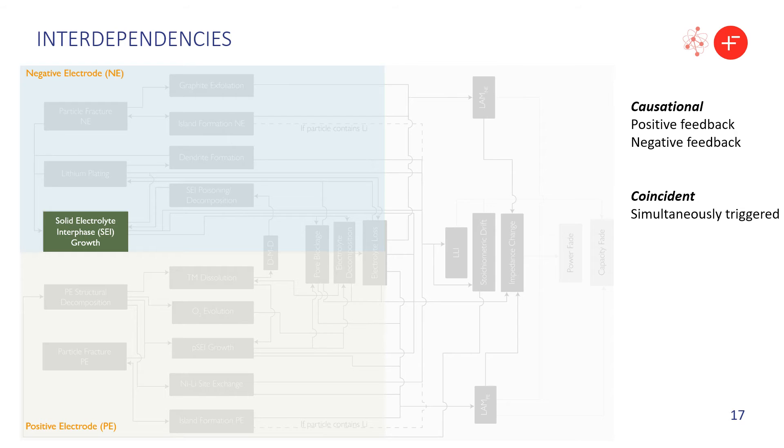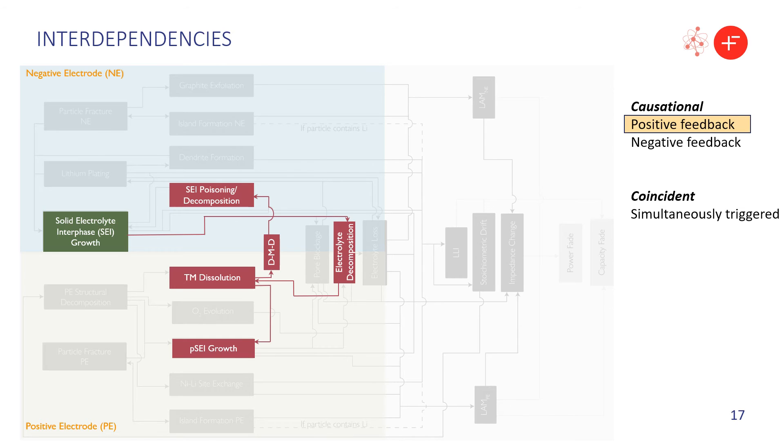Looking at the web of degradation space, we have identified three types of connection between mechanisms. There are positive feedback loops, but also negative feedback loops, both of which imply a causational link. But there are also coincident links in which multiple mechanisms are triggered by the same conditions, but not necessarily connected to each other. Here we see an example of positive feedback. SEI growth leads to electrolyte decomposition. This can form acids which break down the positive electrode material to liberate transition metals. These may either deposit on the positive electrode surface contributing to PSEI growth or migrate across to the negative electrode reacting with the SEI to trigger further SEI growth. Both SEI and PSEI growth result in more electrolyte decomposition.